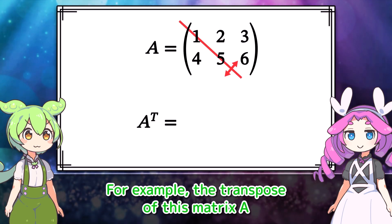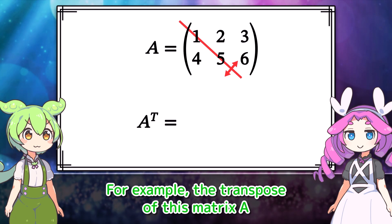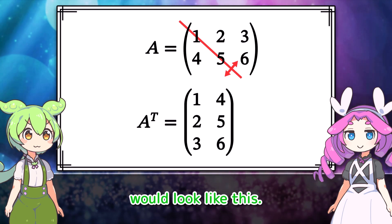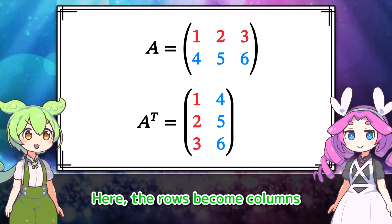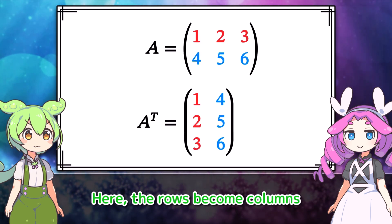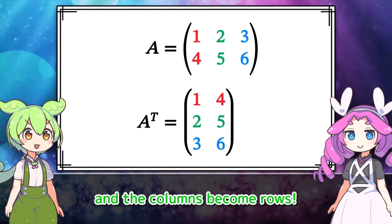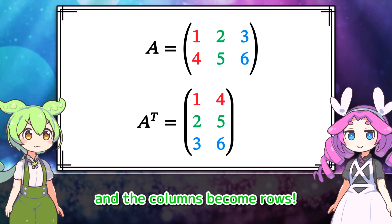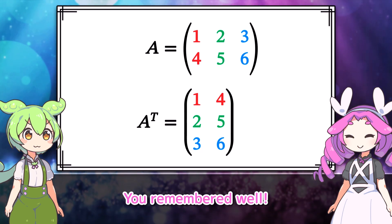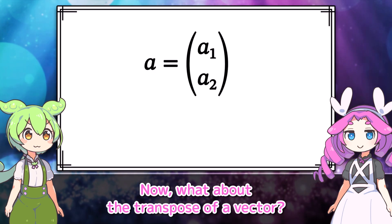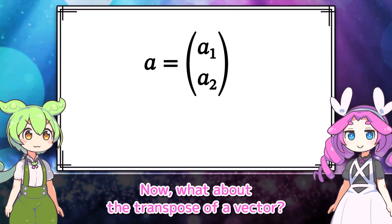For example, the transpose of this matrix A would look like this. Here, the rows become columns, and the columns become rows. You remembered well.